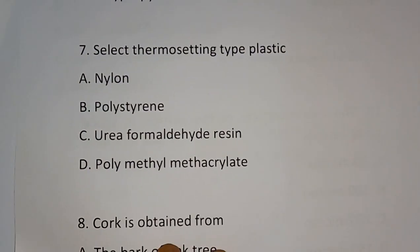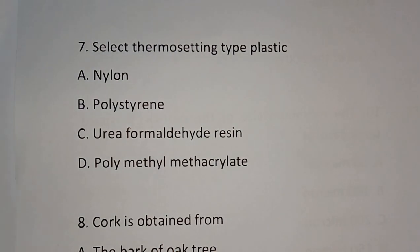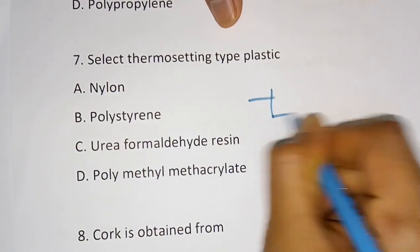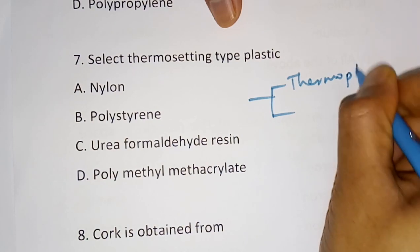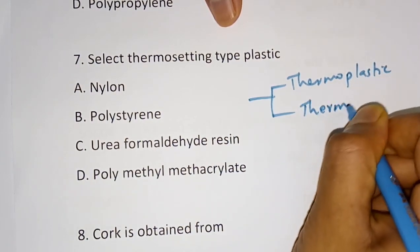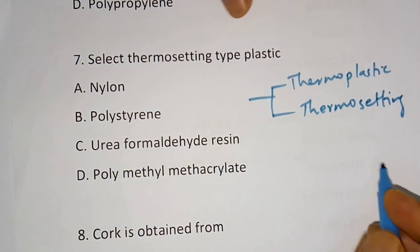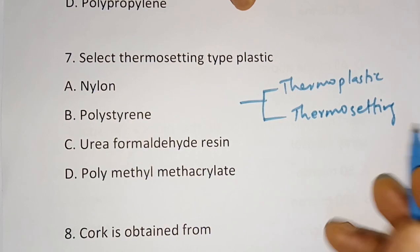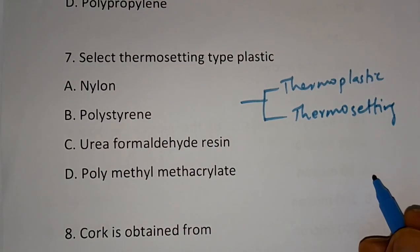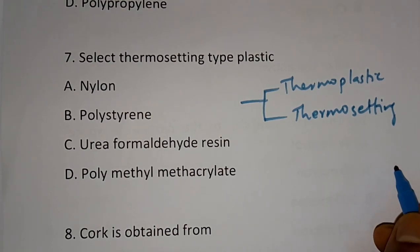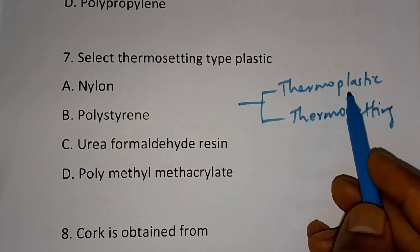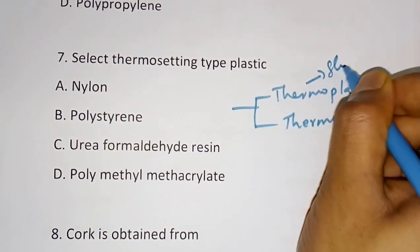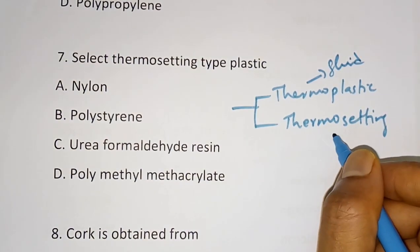Question 7: Select the thermosetting type of plastic. Plastics are classified into thermoplastic and thermosetting types. Thermosetting plastic becomes flexible when heated but does not become fluid. Thermoplastic, however, will become fluid on heating.